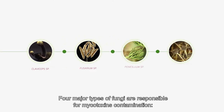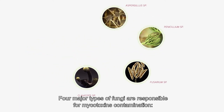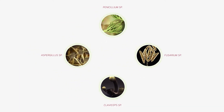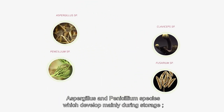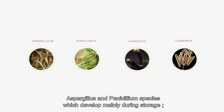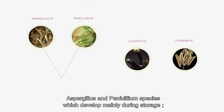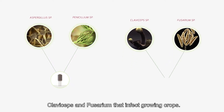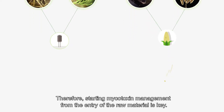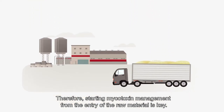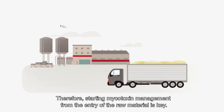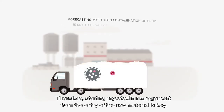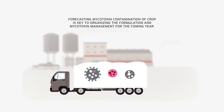Four major types of fungi are responsible for mycotoxin contamination: Aspergillus and Penicillium species, which develop mainly during storage, and Claviceps and Fusarium that infect growing crops. Therefore, starting mycotoxin management from the entry of the raw material is key.